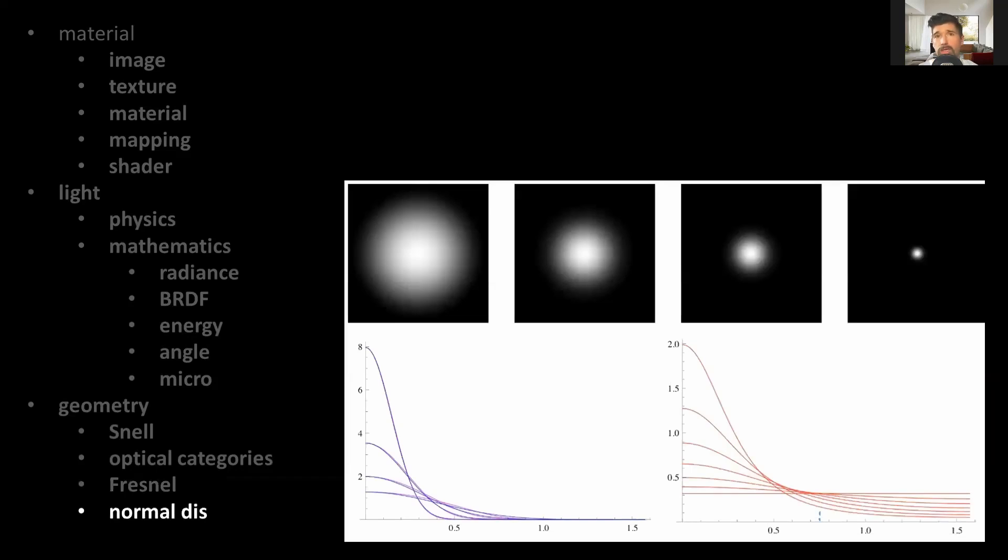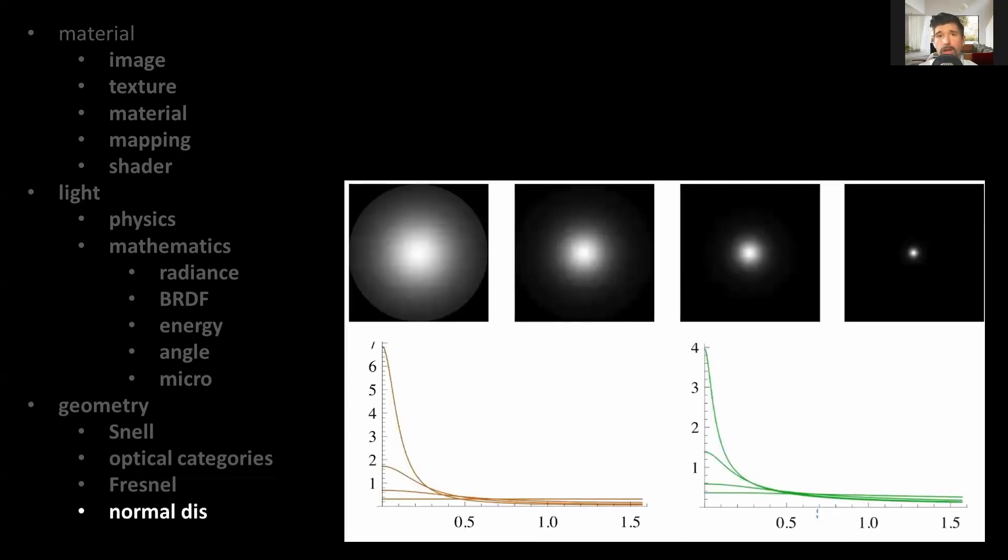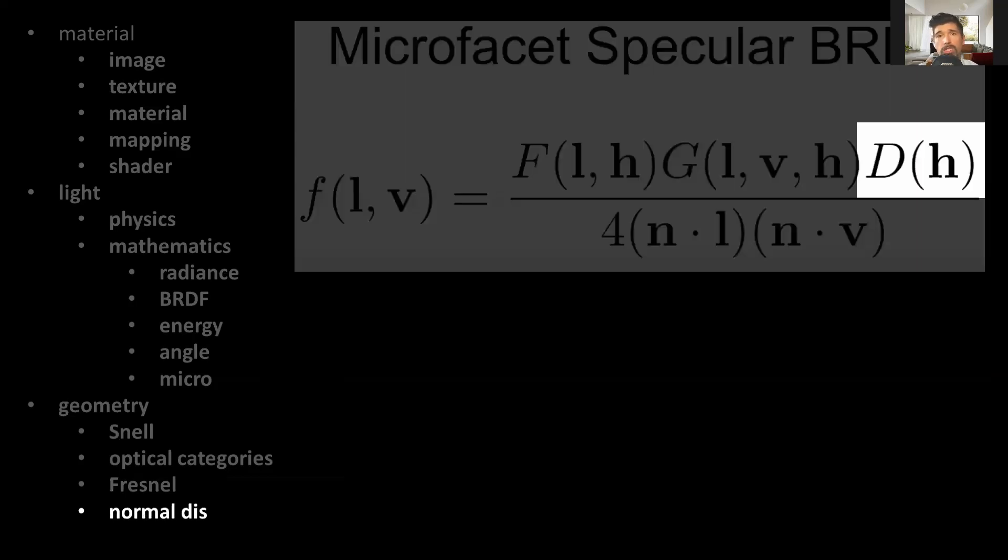So this component contributes to the intensity and look of the highlight, whether they will have this Gaussian appearance like in Blinn-Phong or like in the example of GGX, where the highlight is spiky and has a long tail, which is also called a haze or a halo. This component is self-explanatory, so we can move to the last component, which is the geometry or the shadowing-masking function.